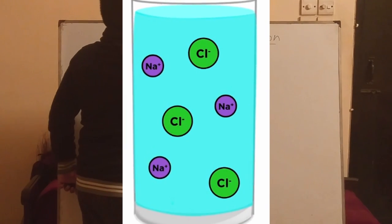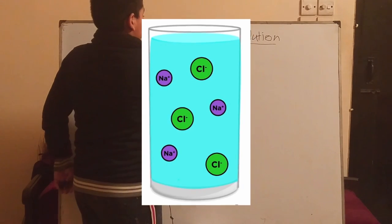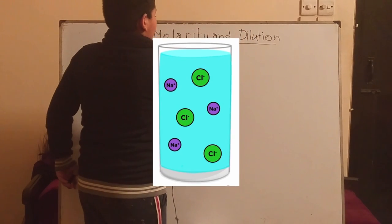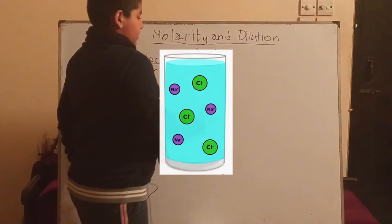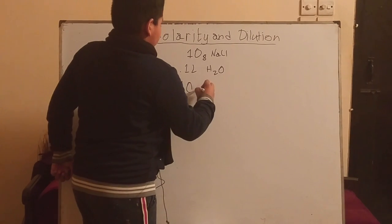Let's say we have 10 grams of sodium chloride and 0.1 liters of water mixed together. For this we're going to do our basic stoichiometry.